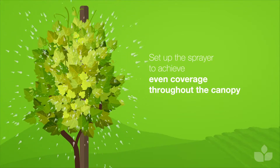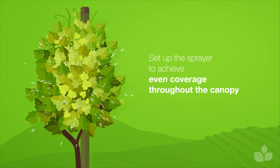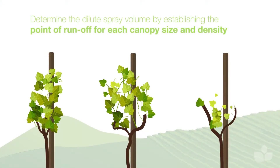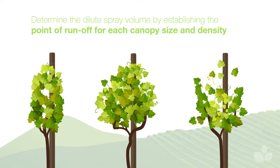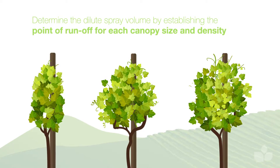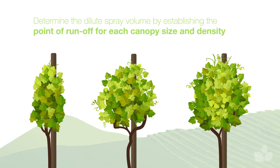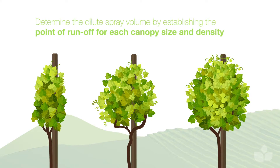To determine the point of runoff or level of wetness for your canopy, consider the following: the dilute spray volume is determined by establishing the point of runoff for each canopy size and density at every key spray timing. An important consideration is that for concentrate spraying, the dilute volume still needs to be established in order to calculate the concentration factor.